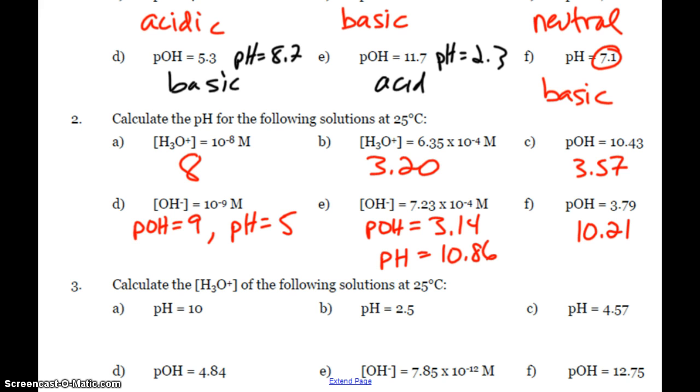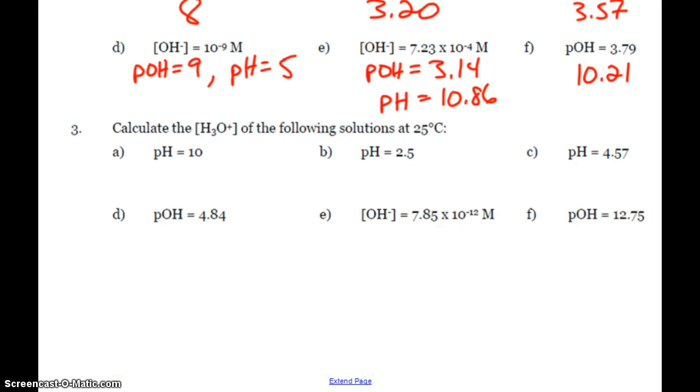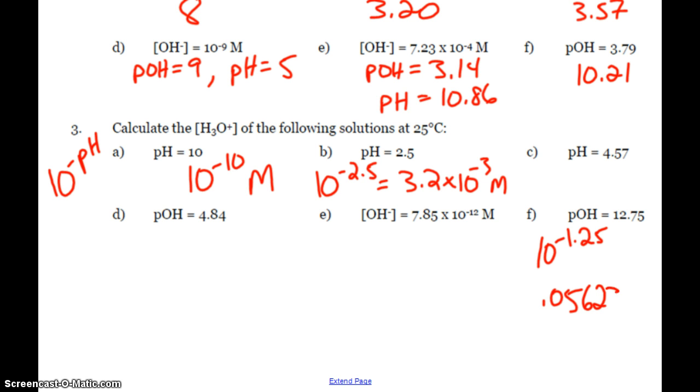If I want to know my hydronium concentration, then I simply use the reverse log. The hydronium concentration is 10 to the negative pH. So if my pH is 10, my concentration is 10 to the negative 10 molar. If my pH is 2.5, it's 10 to the negative 2.5. But I don't leave it like that. I put that in my calculator to get 3.2 times 10 to the negative 3 molar. If I have pOH, then 10 to the negative pOH will give me my hydroxide. Oh, I'm sorry. Easier than that. Subtract from 14 first. 14 minus 12.75 is 1.25. So 10 to the negative 1.25, I get 0.05623 molar.